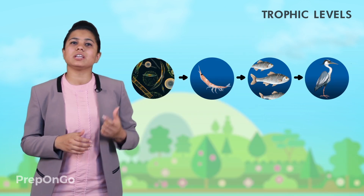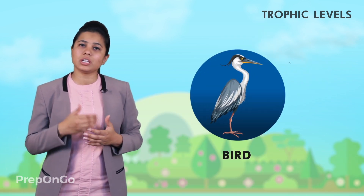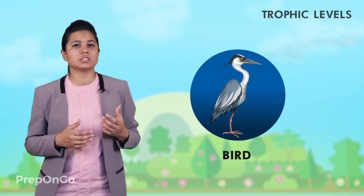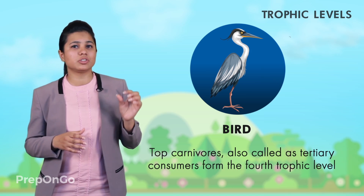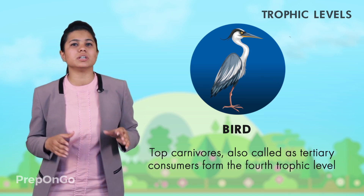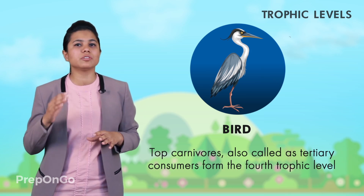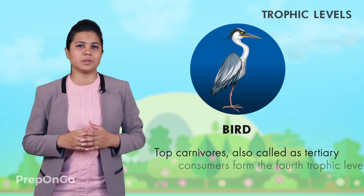Lastly, the birds which eat the fishes are large carnivores. They are the tertiary consumers and form the fourth trophic level.